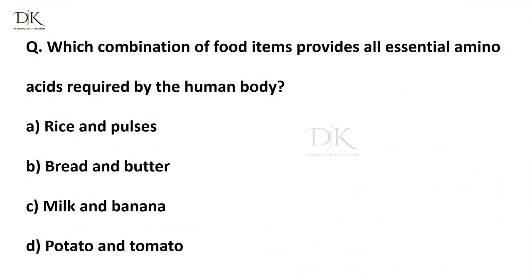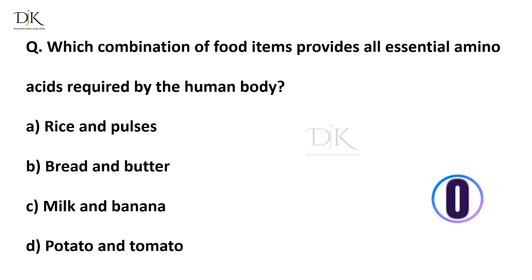Which combination of food items provides all essential amino acids required by the human body? Right answer is rice and pulses.